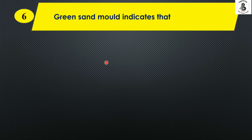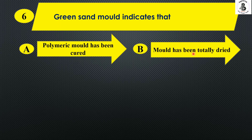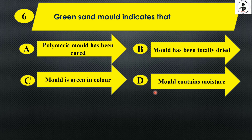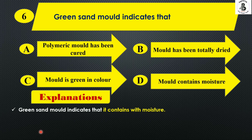Green sand mold indicates that: Option A polymeric mold has been cured; Option B mold has been totally dried; Option C mold is green in color; Option D mold contains moisture. From the name, green sand mold indicates it contains moisture in the sand. So Option D.